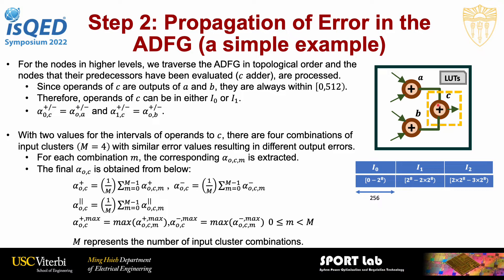Since the operands to C are coming from outputs of A and B, and since A and B were both adding two numbers between 0 and 256, the outputs of A and B will always be between 0 and 512, which means the operands of C will be either in cluster 0 or cluster 1. The operands of C carry the output errors of A and B. Since there are two different values for the interval of operands to C, for the two operands of C there are four different input cluster combinations with corresponding operand error values, which result in different output errors for C. For each combination, the corresponding alpha O C M value is extracted from the lookup tables. The final alpha O C is obtained from these equations: for alpha plus, alpha minus, and alpha absolute, the corresponding alpha O C M values are averaged; for alpha plus max and alpha minus max, we find the maximum of the corresponding alpha O C M values.